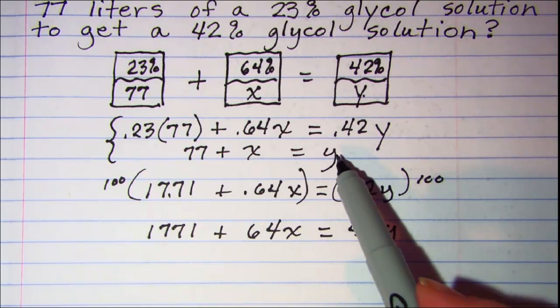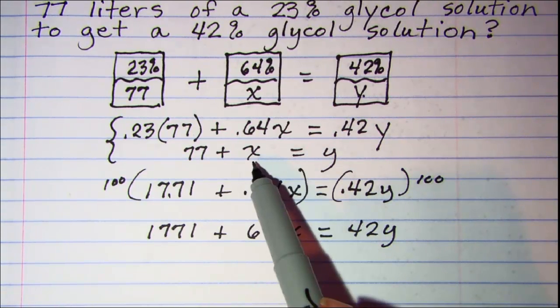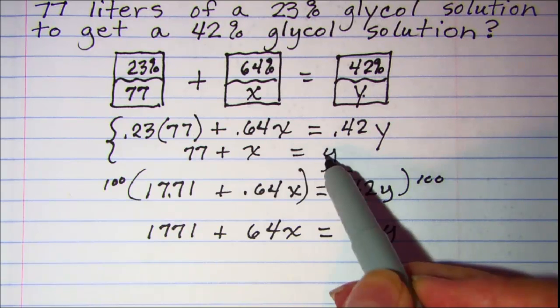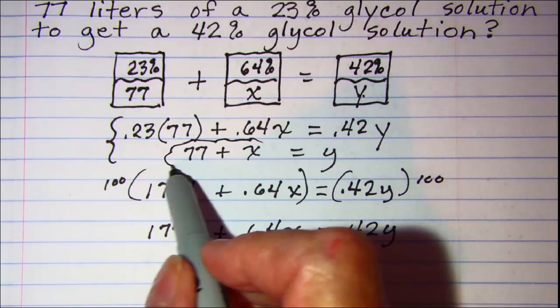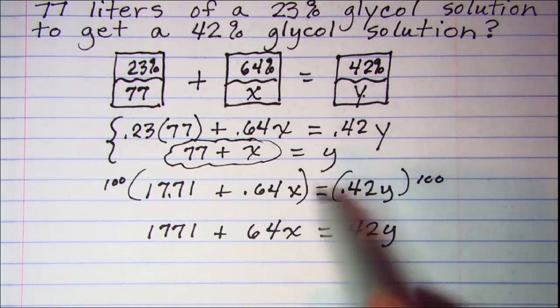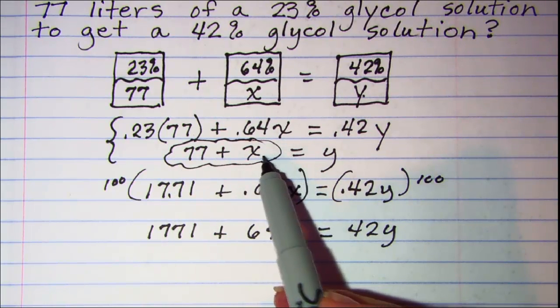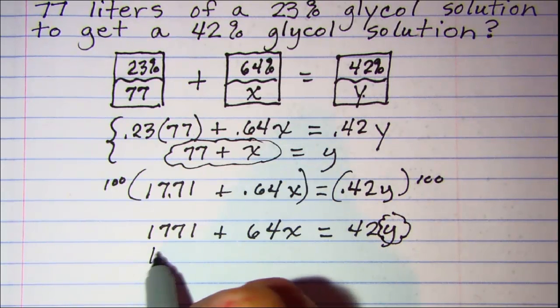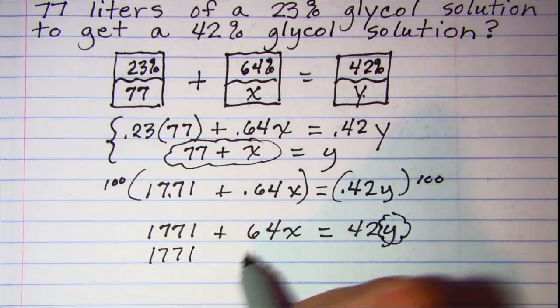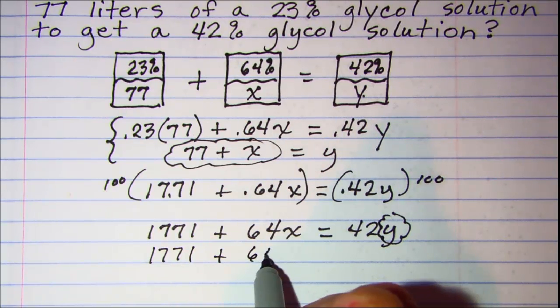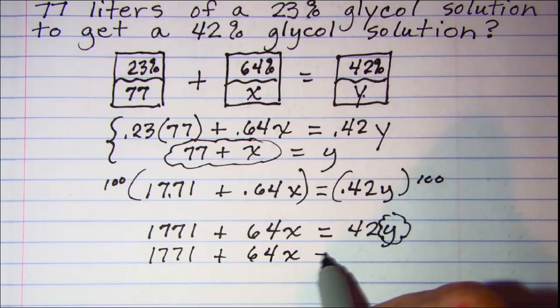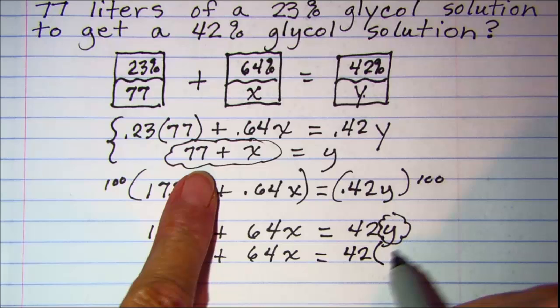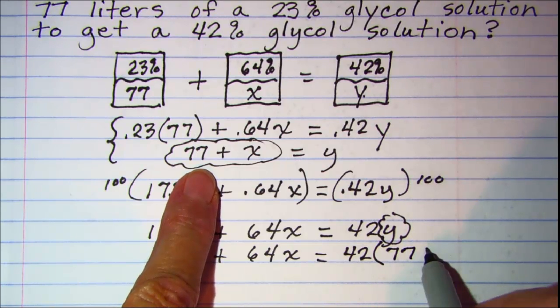Now I can use substitution for solving this system. I can see from this equation that y is equal to this expression. So I'm going to put that expression in in place of y right here. So I now have 42 times 77 plus x.